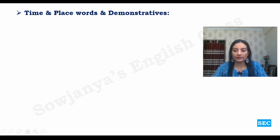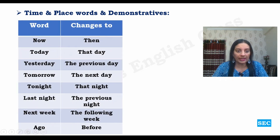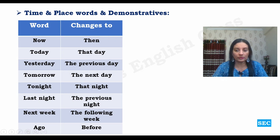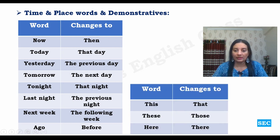Let us look at time and place words and demonstratives. Demonstratives are 'this,' 'that,' 'these,' and 'those.' Time and place word changes: 'now' becomes 'then,' 'today' becomes 'that day,' 'yesterday' becomes 'the previous day,' 'tomorrow' becomes 'the next day,' 'tonight' becomes 'that night,' 'last night' becomes 'the previous night,' 'next week' becomes 'the following week,' and 'ago' becomes 'before.' 'This' becomes 'that,' 'these' becomes 'those,' and place word 'here' becomes 'there.'